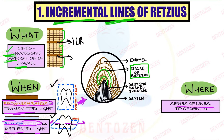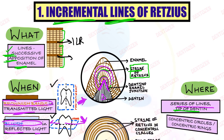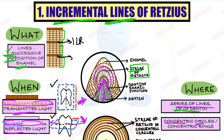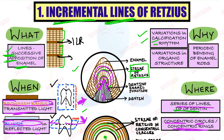In the cross section, these lines appear as concentric circles or concentric rings — concentric meaning the rings have a common center. These are the diagrams for incremental lines. They form because of changes in calcification: the reasons include variations in the calcification rhythm of enamel, variations in the organic structure, or periodic bending of enamel rods. Where there is bending, we can see these lines.